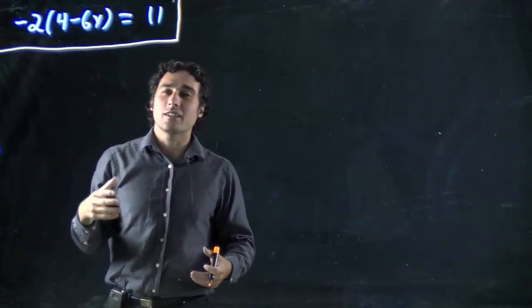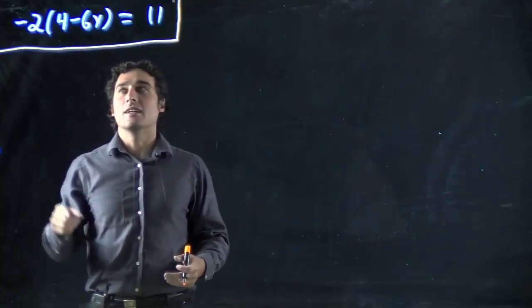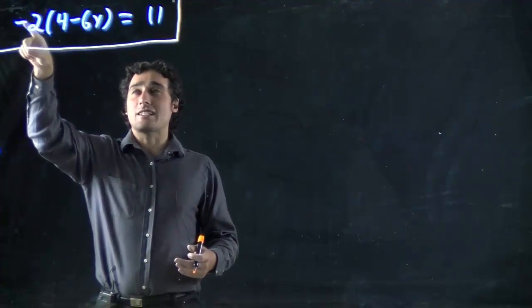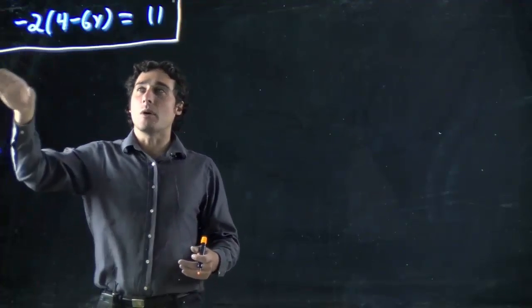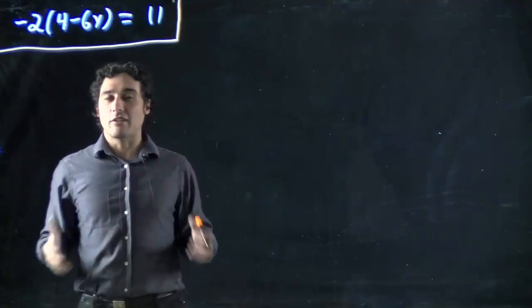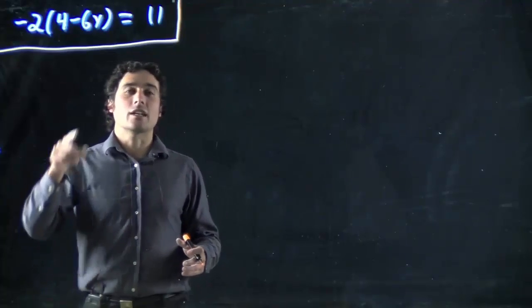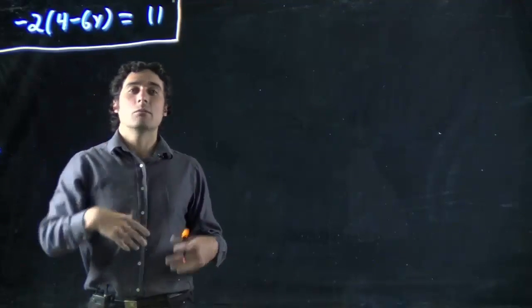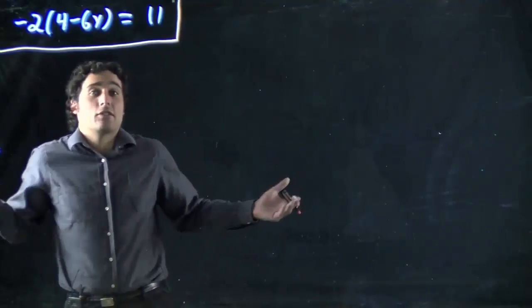Now this solution can be done in multiple ways actually. Somehow we've got to get rid of minus 2. We can actually divide both sides by minus 2 or multiply it in. Generally I'd recommend multiplying it in because otherwise you're going to have to work with a fraction the whole way through. But I'll show you both solutions and you can decide for yourself what you like best.